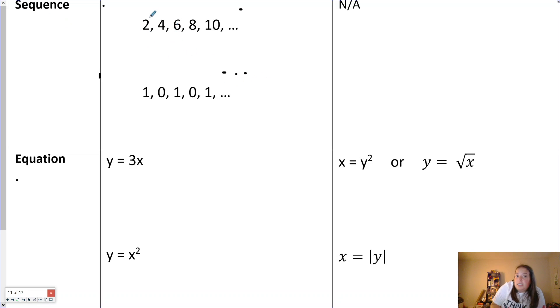Sequences are always functions because they're in a line. This is number 1 in the line, number 2 in the line, number 3 in the line, 4 in the line, 5 in the line. And your spot in line is your input. So any sequence that you're ever dealing with is automatically and undoubtedly a function. Because you don't put anybody in the same spot in line.